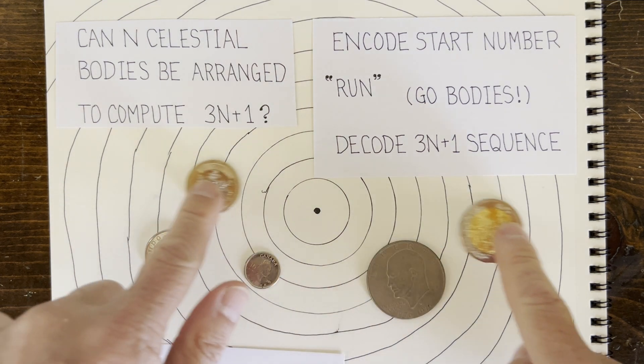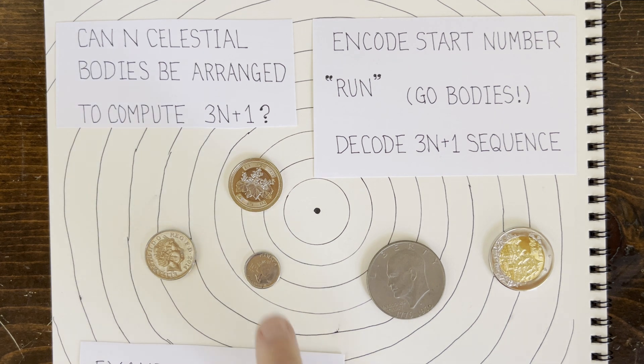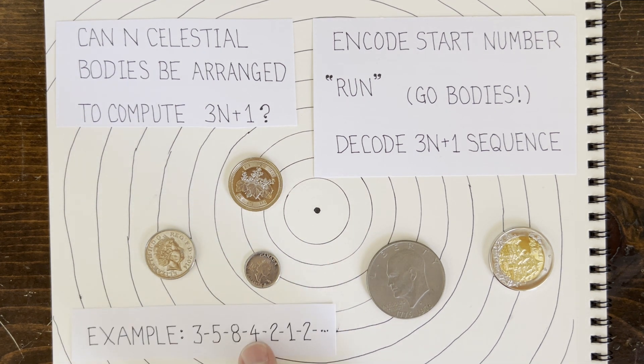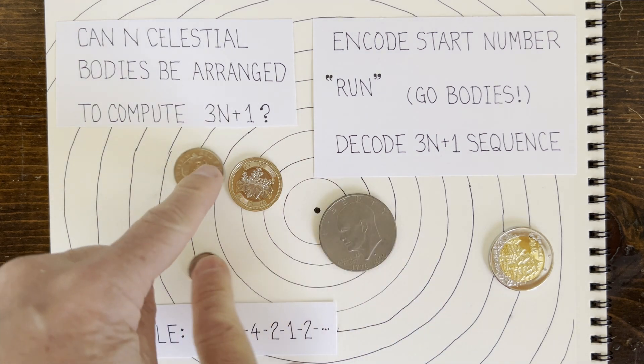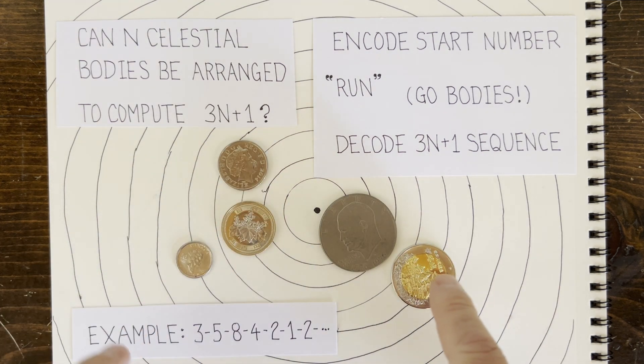For example, suppose the initial configuration for start number 3 looks like this. Notice that the smallest body is 3 units away from the center. The bodies move around based on gravitational attraction, and after a year, they're here.